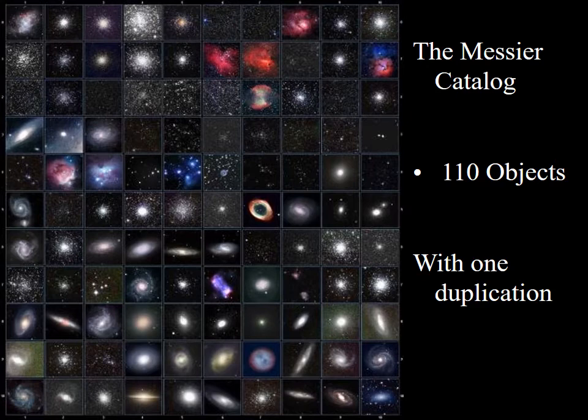Messier eventually reached 109 objects, and then he died. His companion Pierre Méchain added one more object — Messier 110 — to round out the catalog, because Messier had perhaps seen it but just hadn't gotten around to publishing it before he died.